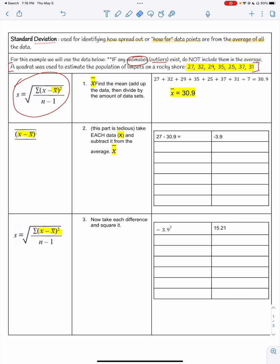First you are going to find the mean and I highlighted each symbol or part of the equation as we're doing it. So X-hat - find the mean. Add up all of your data and then divide by the amount of data sets. So 27, 32, 29, 35, 25, 37, 31, and you have one, two, three, four, five, six, seven data points. We'll divide by seven. You should get 30.9. So the average of all the data is 30.9. And we'll use that again.